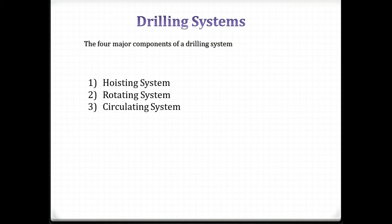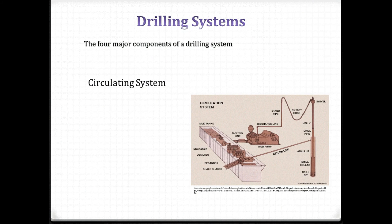The circulating system consists of the mud tanks, the suction line, the mud pumps, the discharge line, the stand pipe, the rotary hose, the swivel, the kelly, drill pipe, drill collars, drill bit, the annulus, the return line, the shale shaker, desander, desilter, and perhaps a degasser.